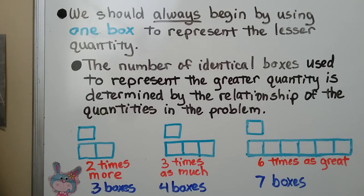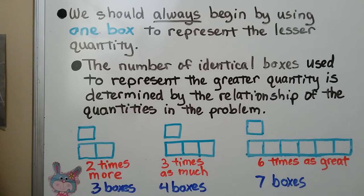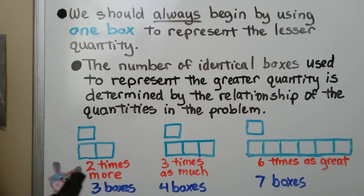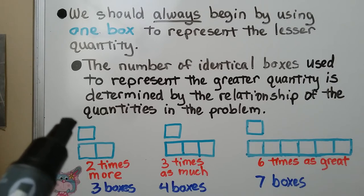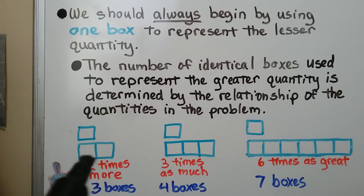We should always begin by using one box to represent the lesser quantity. And the number of identical boxes, the ones we use to represent the greater quantity, is determined by the relationship of the quantities in the problem. So this longer group of boxes is determined by the words in the word problem. If it says two times more, we draw one box for the lesser quantity and two boxes for the two times more — that's three boxes in all.